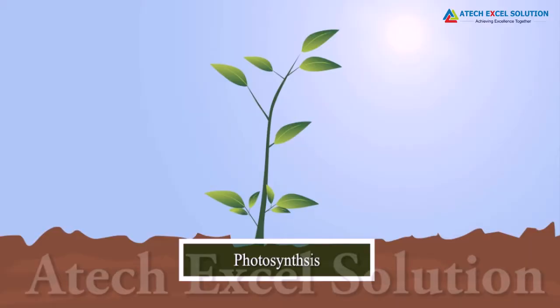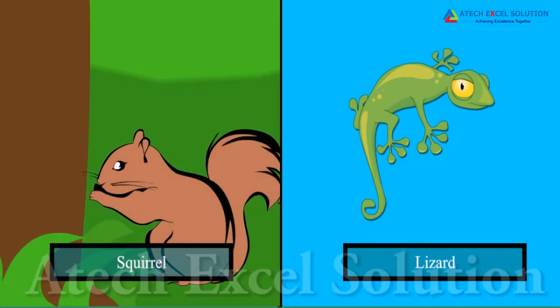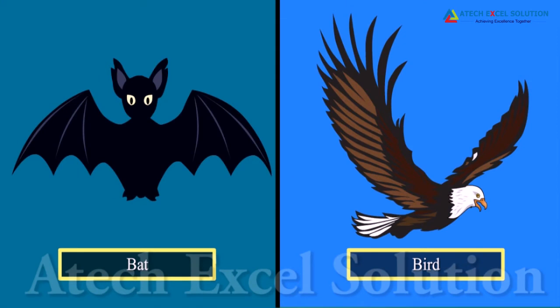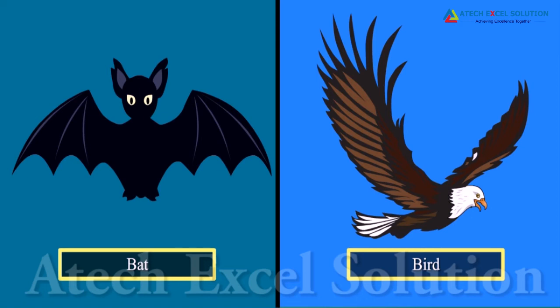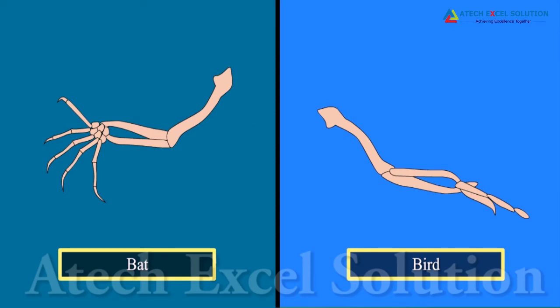Now let us understand analogous characteristics. Squirrel and lizard, though they have four limbs, they are not similar. Bats and birds have wings to fly, but they differ in their structure and components. Birds have feathery wings and bats have skin folds in the wings. They serve similar functions but have different structures. Hence, they show analogous characteristics. Homologous characteristics help us to trace evolutionary relationships.